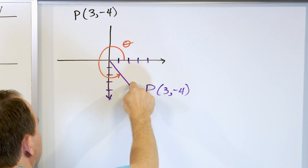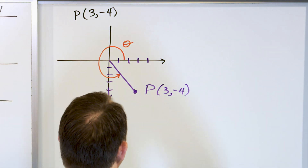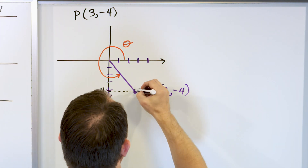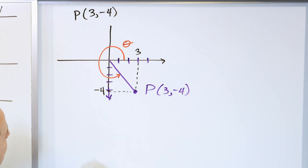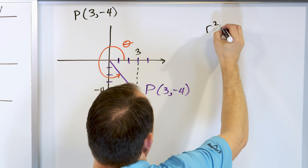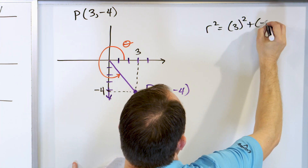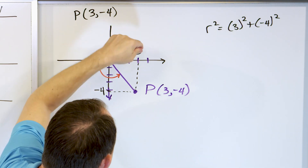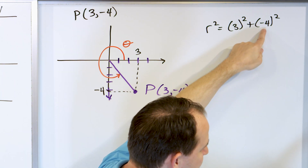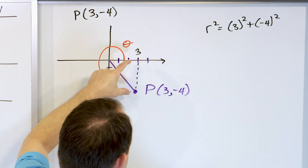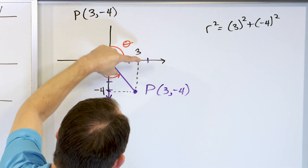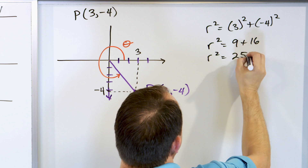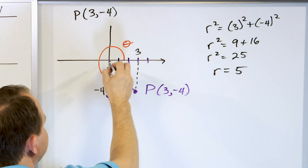We also need to know R — the distance from the origin to point P. This forms a triangle. It goes down to negative four and over to positive three. So R² = 3² + (−4)². It's the distance formula, or you can think of it as the Pythagorean theorem. Squaring, I get 9 + 16 = 25. Taking the square root of both sides gives R = 5. So the distance is five units.